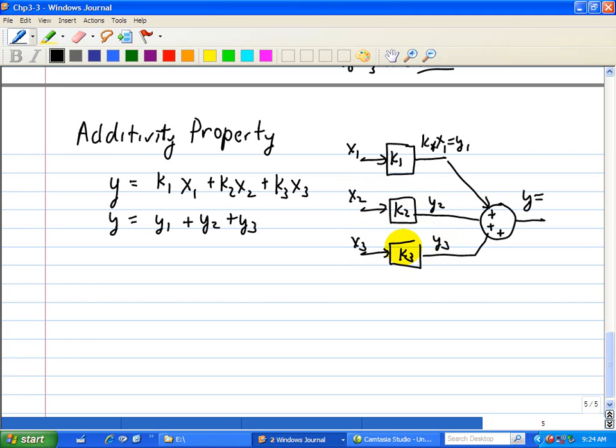So this is what we mean by the additivity property associated with a linear resistive circuit. For the sake of completeness, let me put Y is output due to Y1 plus Y2 plus Y3.